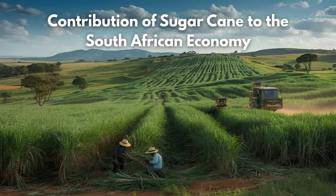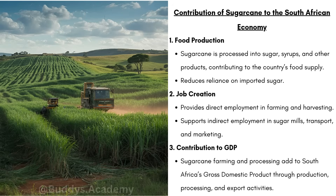Let's look at the contribution of sugarcane to the South African economy. Firstly, food production: sugarcane is processed into sugar, syrups and other products, contributing to the country's food supply. Sugarcane is the main source of sugar used in our homes. There is also a reduced reliance on imported sugar — if South Africa produces its own sugar, we don't need to import it, which saves a lot of money.